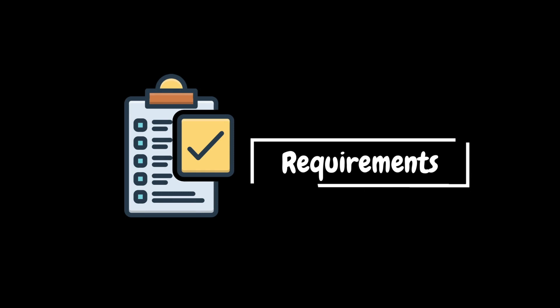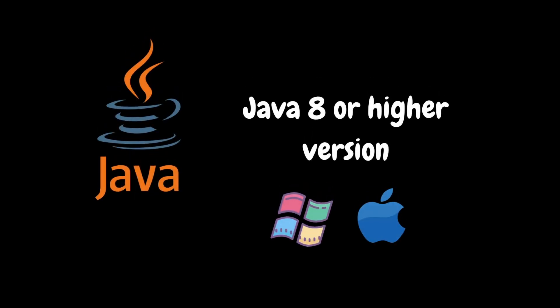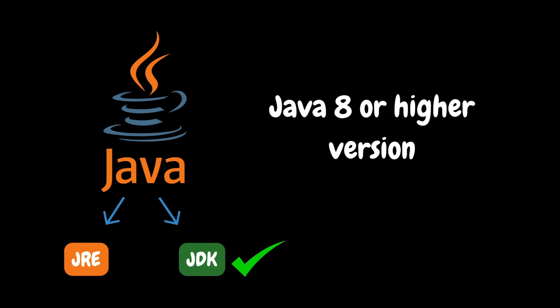First, let's quickly understand the prerequisites required for installing JMeter. JMeter is a 100% Java application and should run correctly on any system that has a compliant Java implementation. You should have at least Java 8 or higher version running on your system for the latest JMeter version. Although you can use a JRE — Java Runtime Environment — it is better to install a Java Development Kit because JMeter needs the keytool utility from JDK for recording HTTPS traffic.